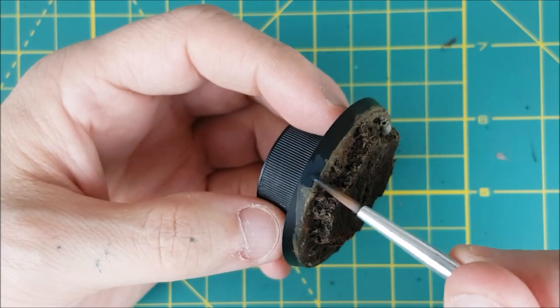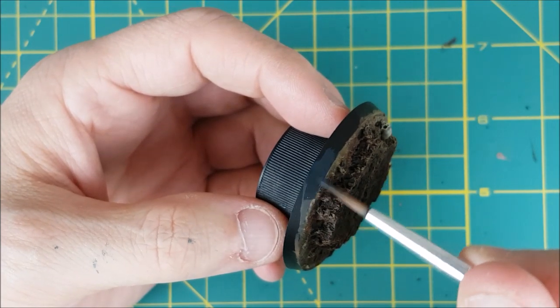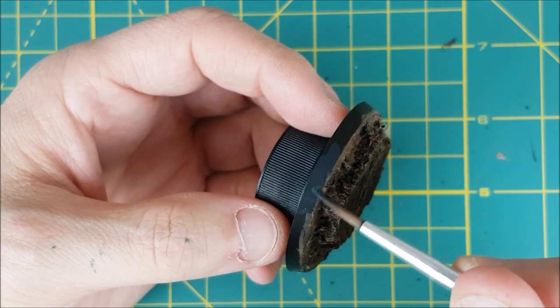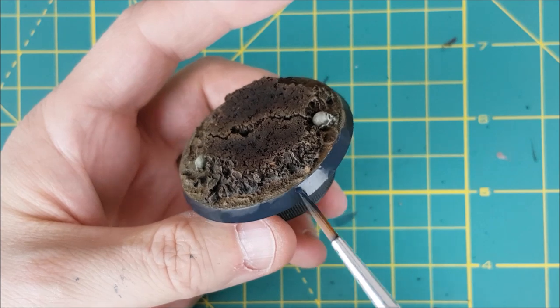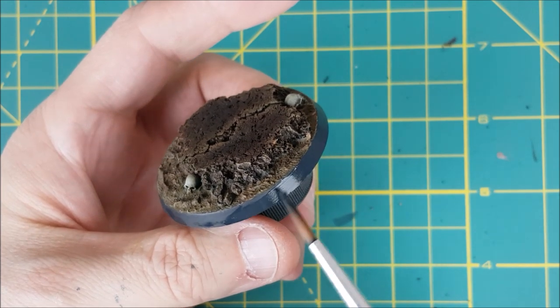Next paint all around the rim of the base with the color of your choice. I usually go with German Grey for this. Once that's dry, you'll want to spray the entire thing with a matte varnish. I normally use Testors Dullcote, but any matte varnish will do fine.